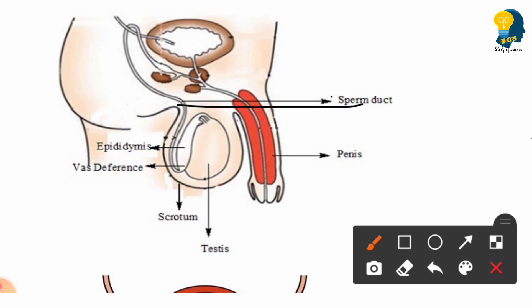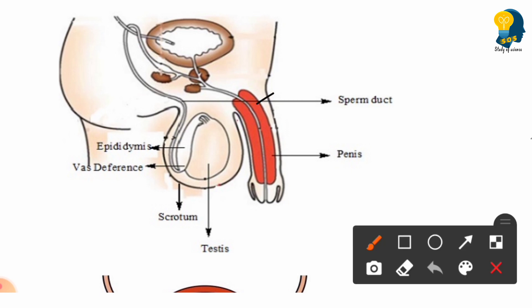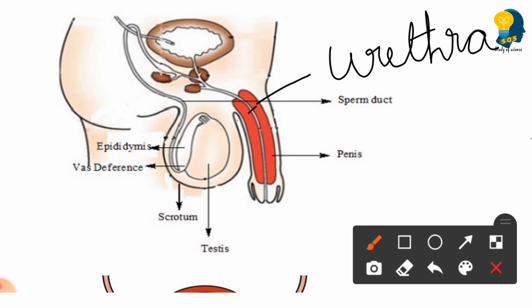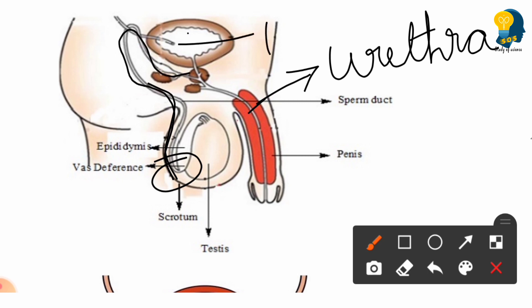Moving to the next part, called the sperm duct — a duct that helps in passing the sperms. The next part is the urethra, which is a tubular structure. This urethra emerges from the vas deferens and is connected to the urinary bladder. You can observe a brown-colored structure here — that is the urinary bladder, which contains urine.